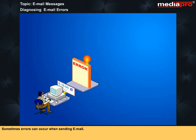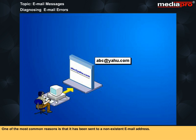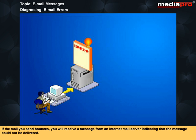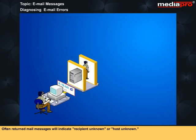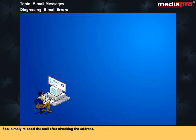Sometimes errors can occur when sending email. Undelivered mail is referred to as bounced and can occur for many different reasons. One of the most common reasons is that it has been sent to a non-existent email address. If even a single character is entered incorrectly when typing an email address, the mail will not go to the intended destination. If the mail you send bounces, you will receive a message from an internet mail server indicating that the message could not be delivered. Often returned mail messages will indicate recipient unknown or host unknown. This problem could, however, be caused by a user's mail server being down when the mail delivery was attempted. If so, simply resend the mail after checking the address.